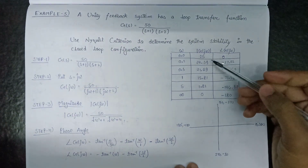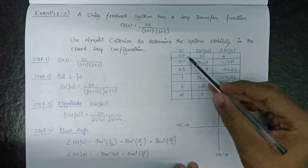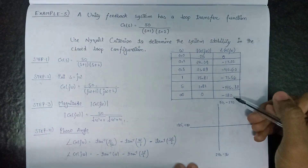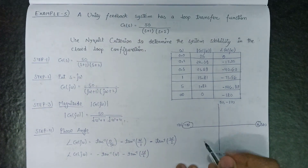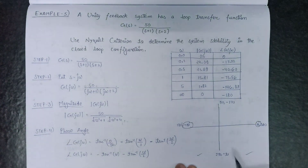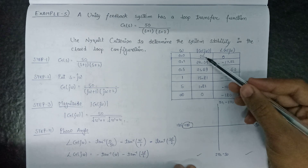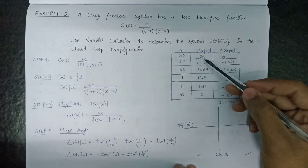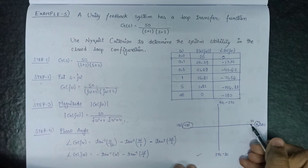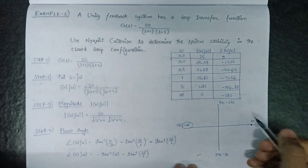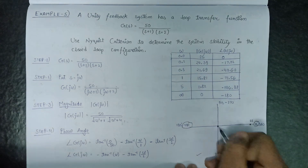From the table we can observe that the phase angle starts from 0° at ω=0 and ends at minus 180°. So the plot lies in the 3rd and 4th quadrants since all the angles are negative. At ω=0 the magnitude is 25, so our polar plot originates from 25. At ω=infinity the magnitude becomes 0, so our polar plot terminates at the origin.